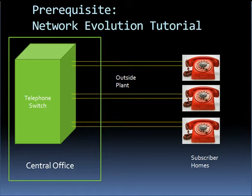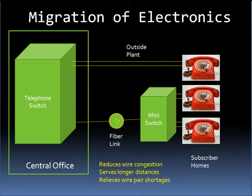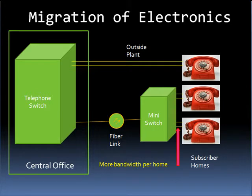To review quickly, the migration of electronics from the central office to the outside plant was driven by the Baby Bell's need to reduce wire congestion, serve longer distances, and relieve wire pair shortages. Back in the 1970s, prior to the days of the internet, there was little need to provide additional bandwidth to phone subscribers. However, the Bells quickly realized that the movement of electronics closer to the customer also meant that they could provide more bandwidth to the home.